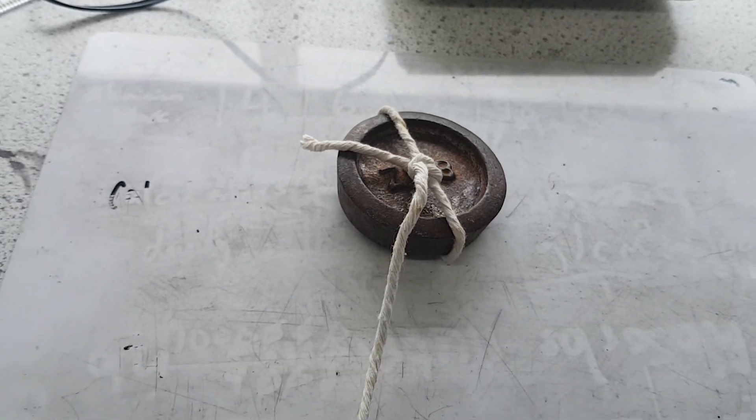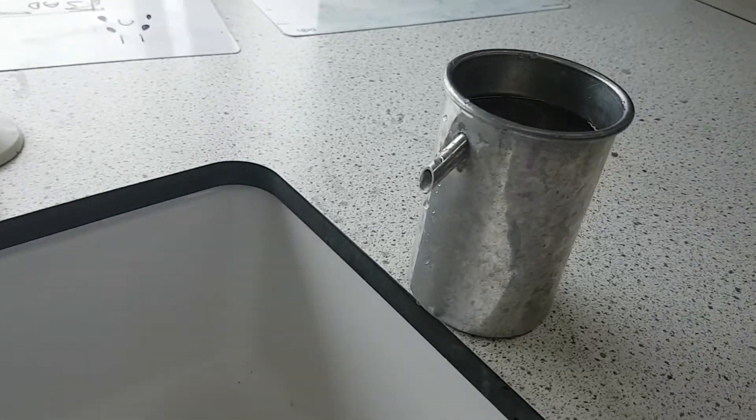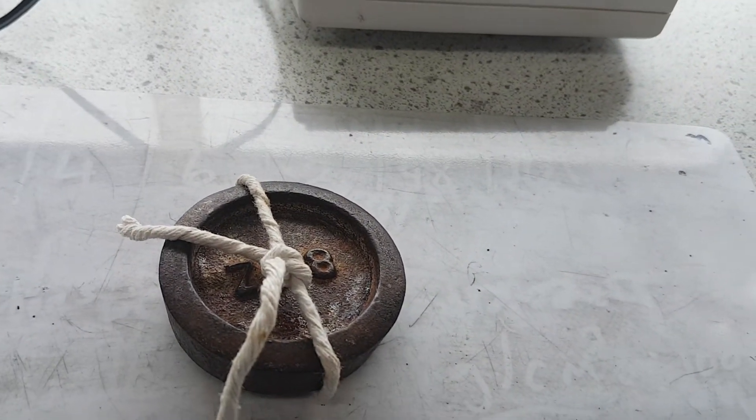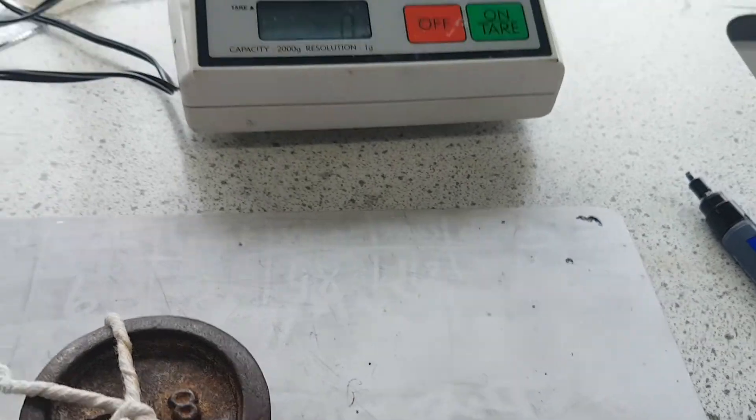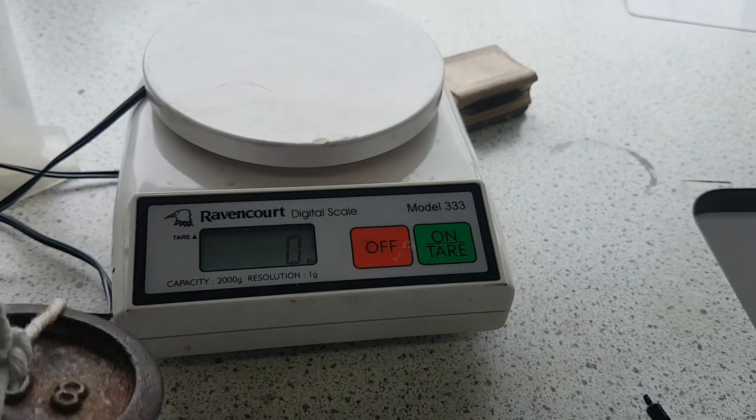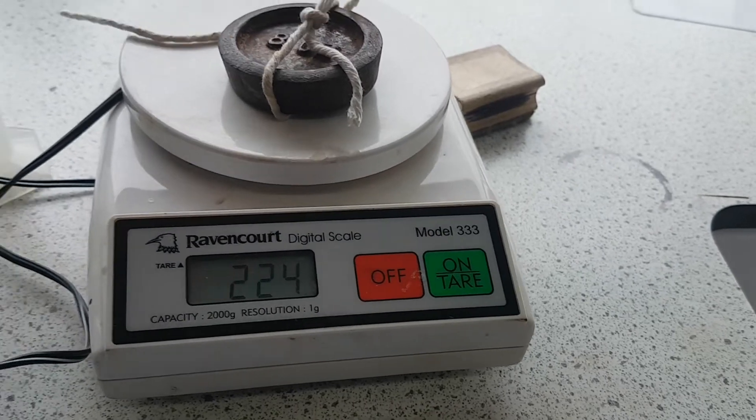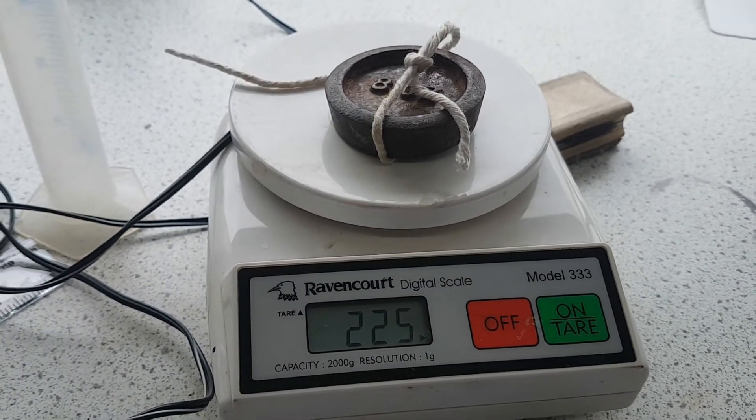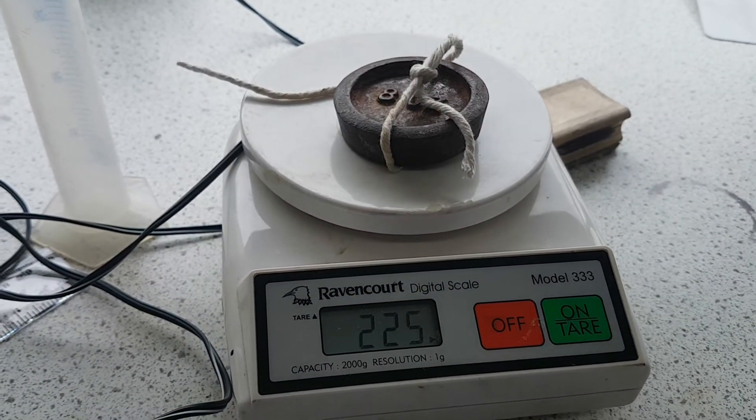So I'm going to take my irregular shaped object. I'm going to tie it onto a piece of string so that I can dip it into the displacement or the Eureka can. So what I'm going to do, I'm going to place this onto my measuring balance so that I can get the mass of it. And so the mass of this is 225 grams.